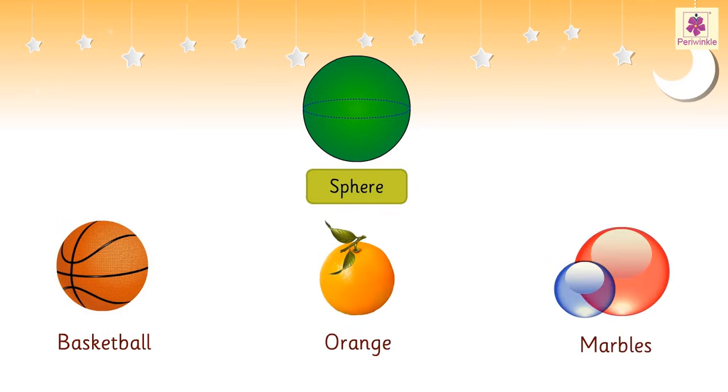This is a sphere. A basketball, an orange, and marbles are examples of a sphere.